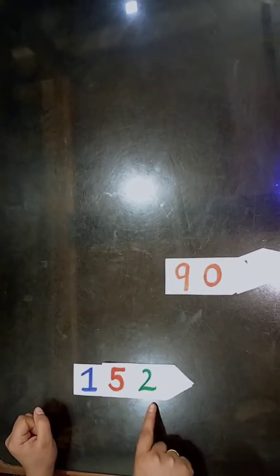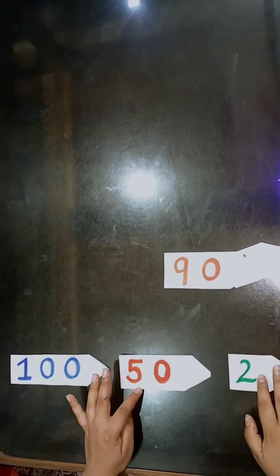So this is the corresponding form of 152. Now 1 is in 100's place, 5 is in 10's place, 2 is in 1's place. This is the corresponding form and this is the expanded form.